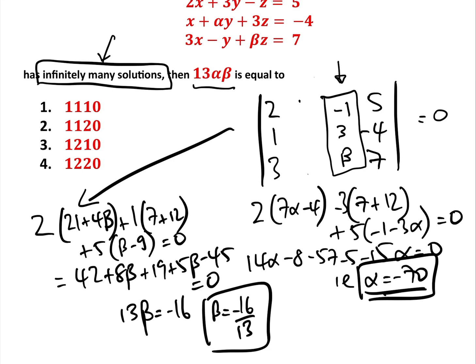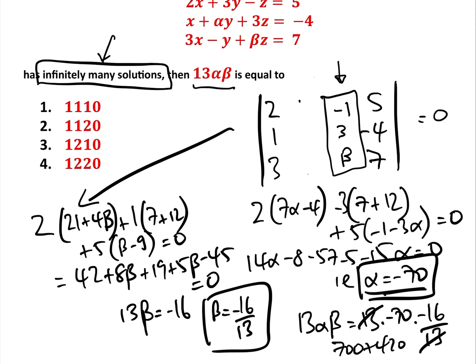We now know both α and β just by hiding the right columns. All we need to do is work out 13αβ: that equals 13 × (−70) × (−16/13) = (−70) × (−16) = 700 + 420 = 1120, which is answer number 2.